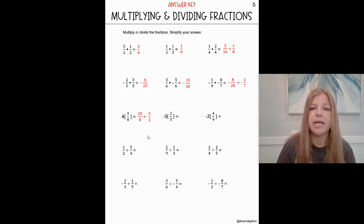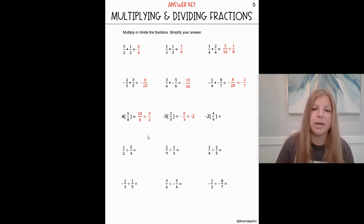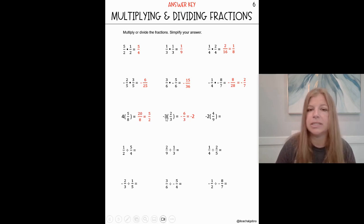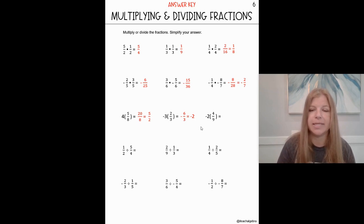Same thing for the next one: negative three times two gives me negative six. Negative six divided by three gives me negative two. Another way to think about this is that when you're multiplying by an integer that is the same number as the denominator, those numbers will actually cross-simplify each other out, and you're just left with the negative and the two — the numerator. Next one: negative two times four ninths. Negative two times four is negative eight, so it would be negative eight ninths.